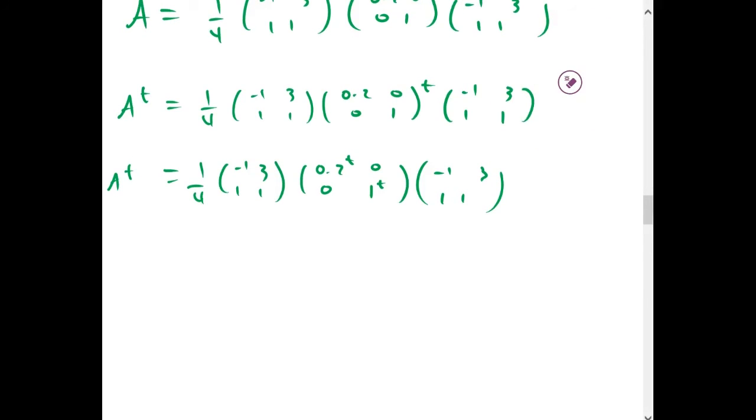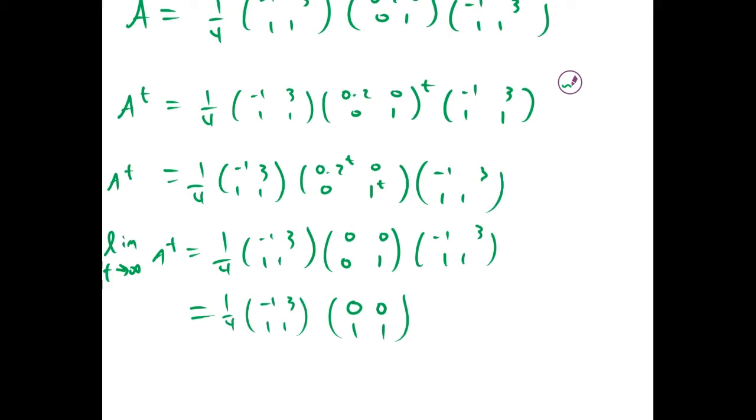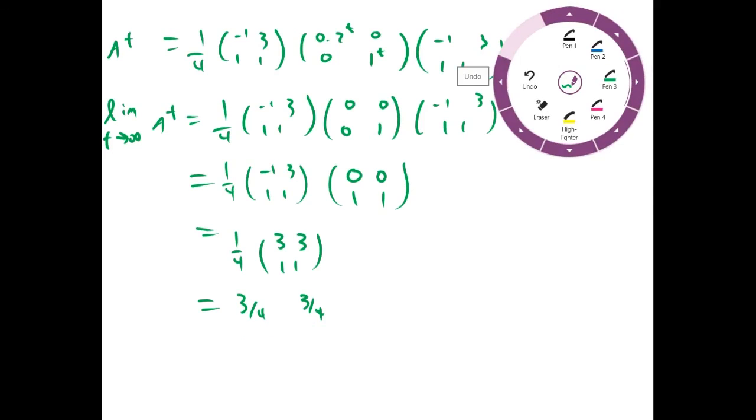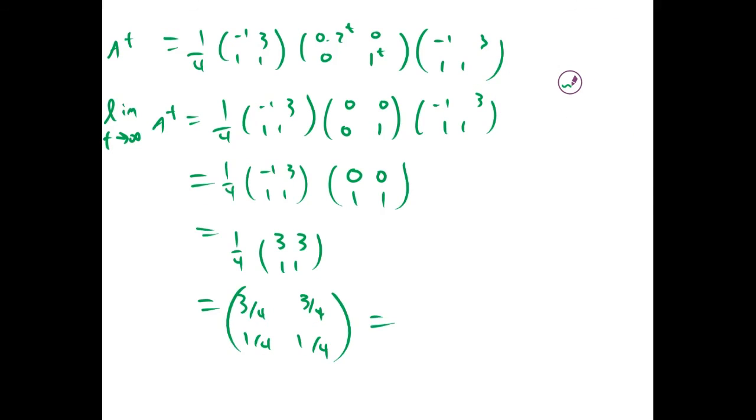The limit as t approaches infinity of A to the t: as 0.2 to the t goes to infinity, it equals 0. And 1 to the t as t goes to infinity is just 1. Multiplying these matrices out gives us (0, 0; 1, 1) times (-1, 3; 1, 1), which equals (3, 3; 1, 1), divided by 4. The answer is 3/4, 3/4, 1/4, 1/4, or in decimal form 0.75, 0.75, 0.25, 0.25.